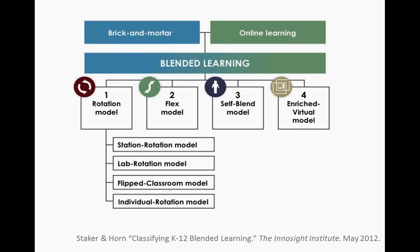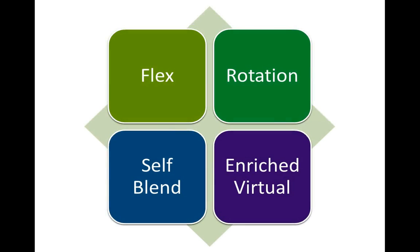Let's jump in and give you a little more information about each of these models. Flex can be thought of as an online platform that delivers most curriculum where the teacher provides support on an as-needed basis. Rotation is when students rotate between learning stations — small group, collaborative, independent, and online activities — all within a classroom. Self-blend is remote learning that supplements in-person brick-and-mortar courses. And the enriched virtual model uses an online platform and teacher to deliver all curricula, with students working remotely.